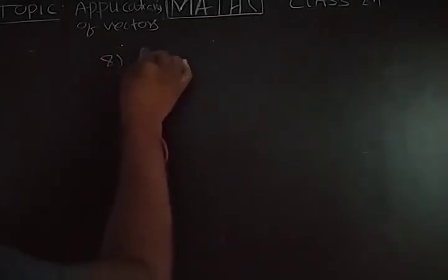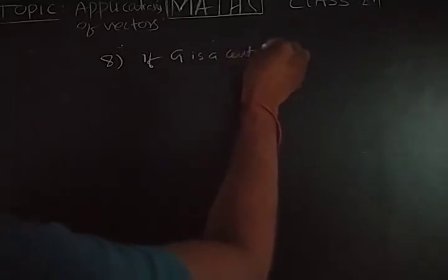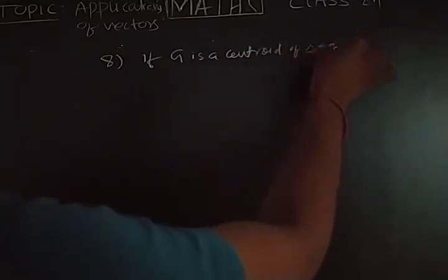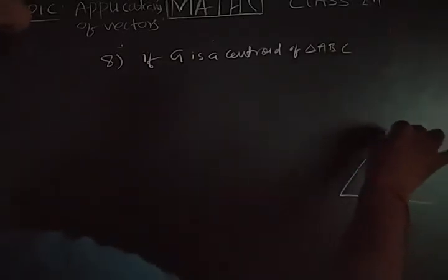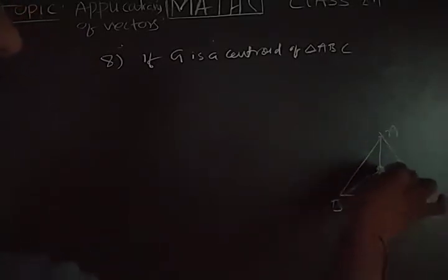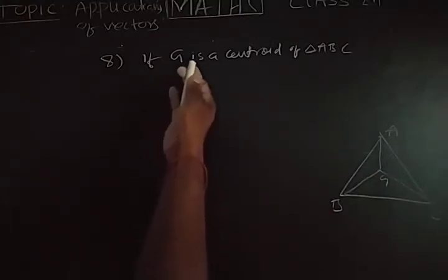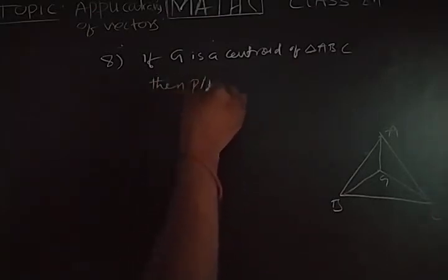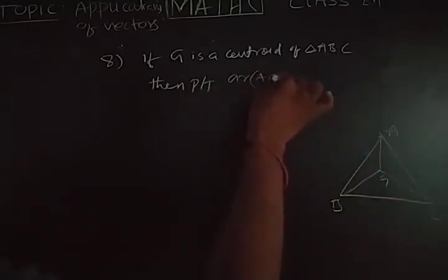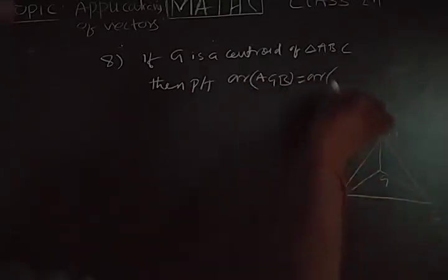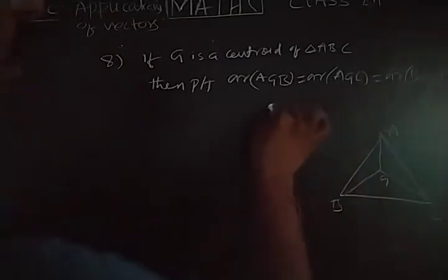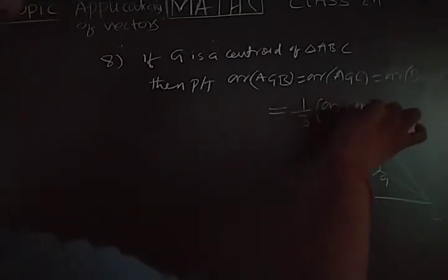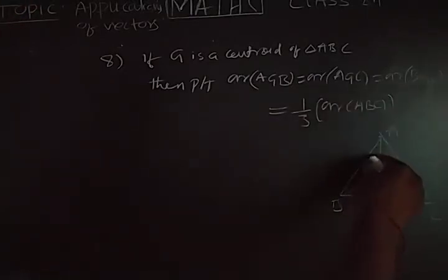Next, eighth question: if G is the centroid of triangle ABC, prove that area of triangle AGB equals area of triangle AGC equals area of triangle BGC equals one-third of area of triangle ABC. Every small triangle area will be one-third of the total triangle area — we are going to prove this.